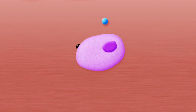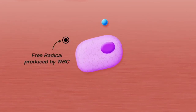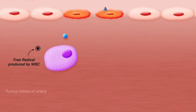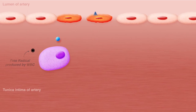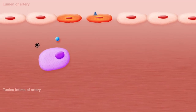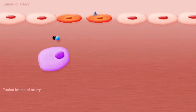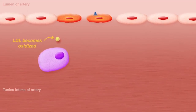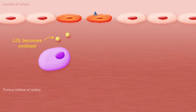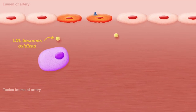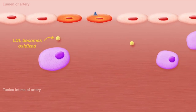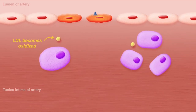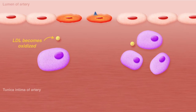White blood cells are capable of producing free radicals, and when these free radicals come in contact with LDLs, oxidation occurs. Oxidized LDL particles are especially effective at attracting and activating white blood cells.